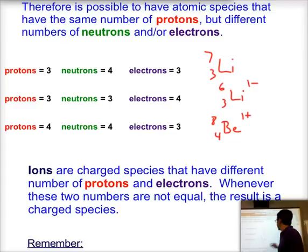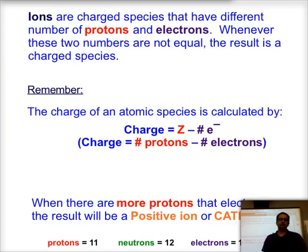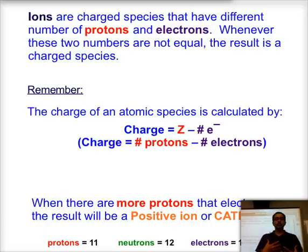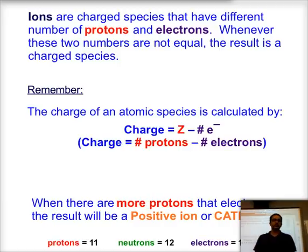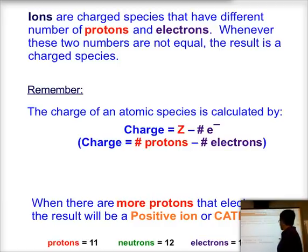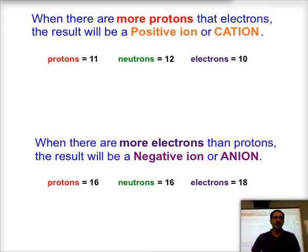Ions are charged species that have a different number of protons and electrons. When those two numbers are not the same, you end up with a charge. Charge is equal to the atomic number minus the number of electrons — in other words, number of protons minus number of electrons. If you have more protons than electrons, you get a positive ion called a cation.